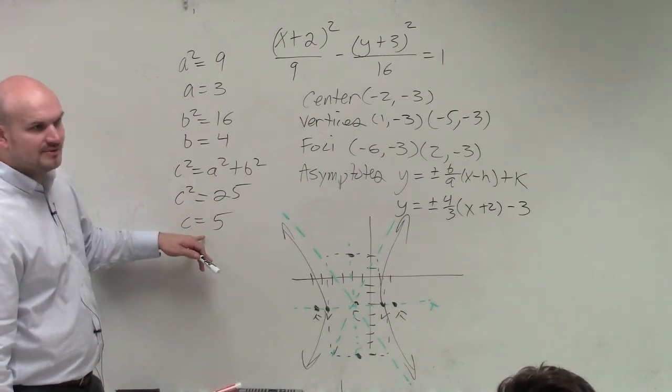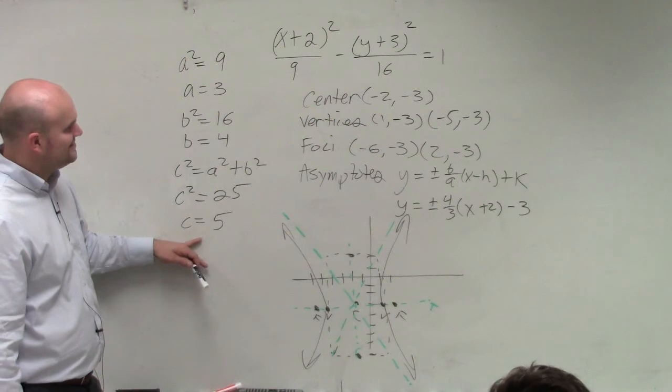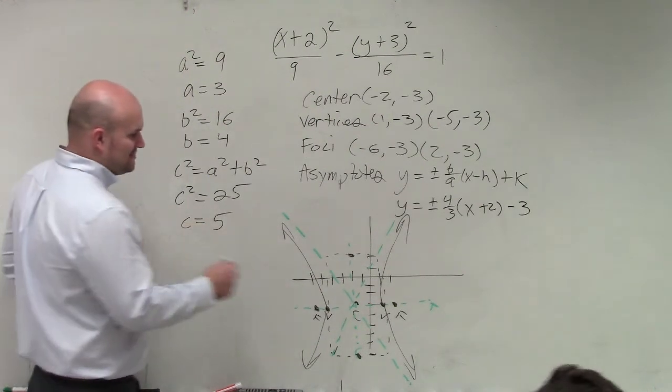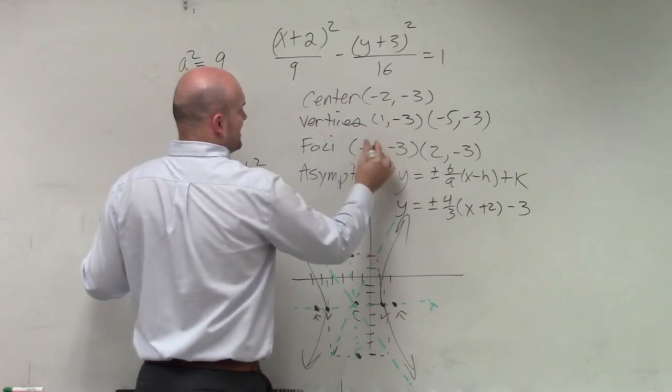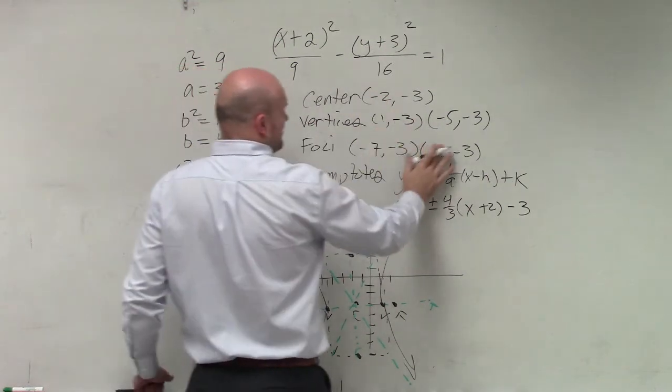So the distance from my center to my foci is c. Which I did that wrong, didn't I? Nobody said anything. Come on, guys. Distance to that is 5. So I should have been going left and right 5. So therefore, that is from my center. That should be a negative 7. And that should be a 3.